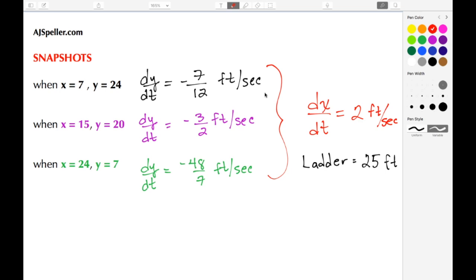We're going to start with the first one. Here's a snapshot where the x value was 7. We figured out that y was 24, and we figured out the rate at which the top of the ladder was moving down was negative 7/12 feet per second.